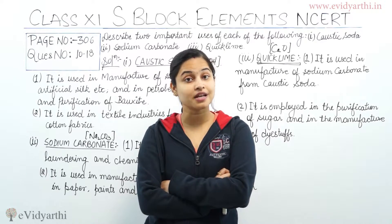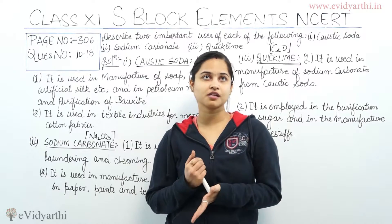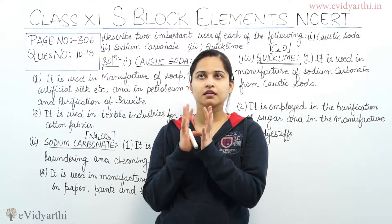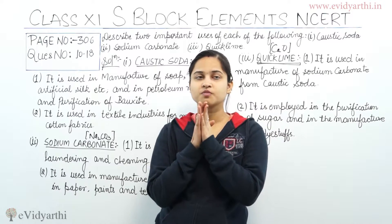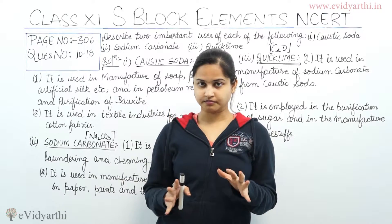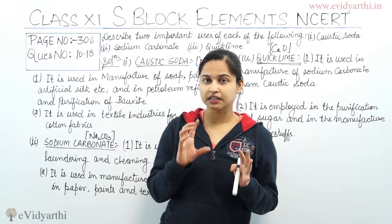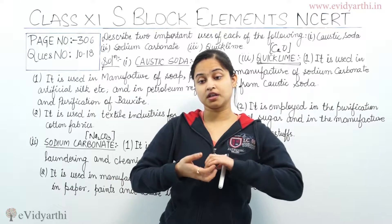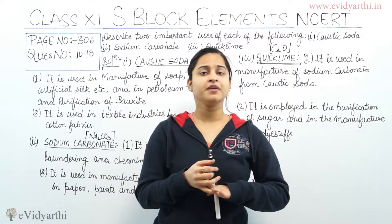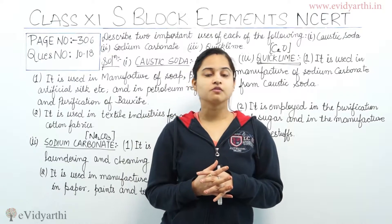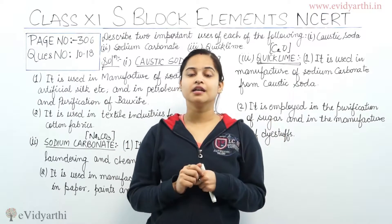The second use of caustic soda is that it is used in the textile industries for mercerizing cotton fabrics. Mercerization is a process that makes cotton able to take better dye and increases its lustre.